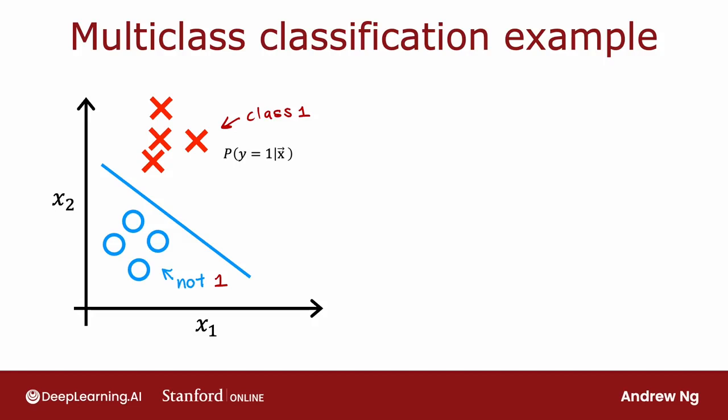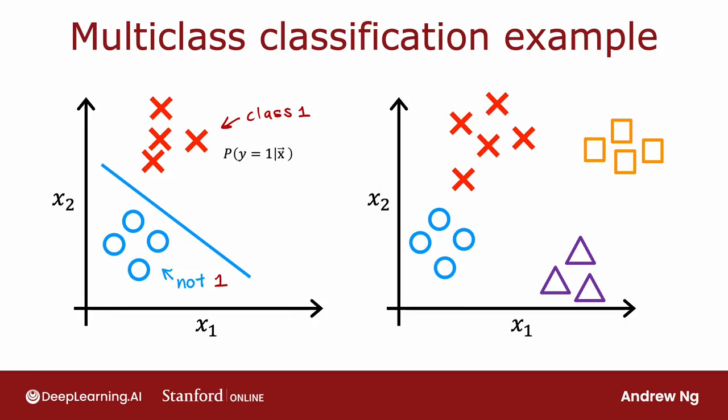With multi-class classification problems, you would instead have a data set that maybe looks like this, where we have four classes where the o's represent one class, the x's represent another class, the triangles represent the third class, and the squares represent the fourth class.